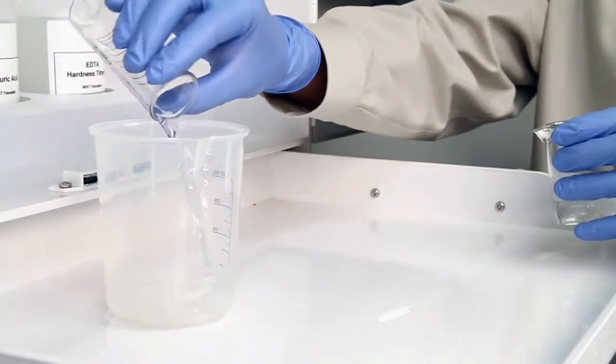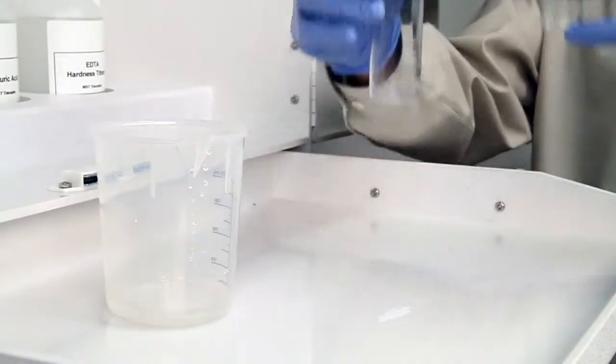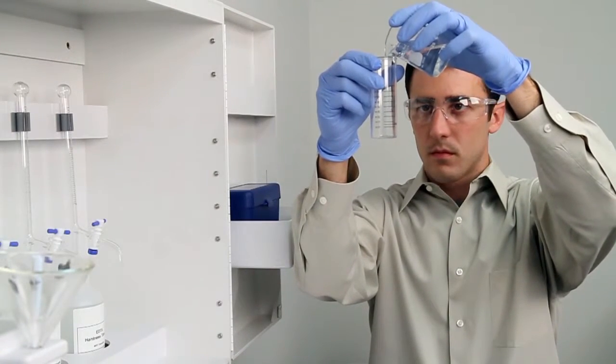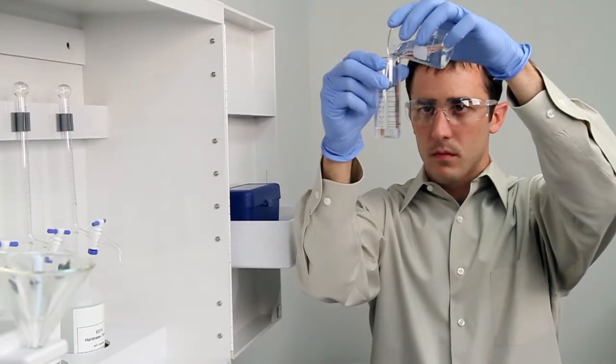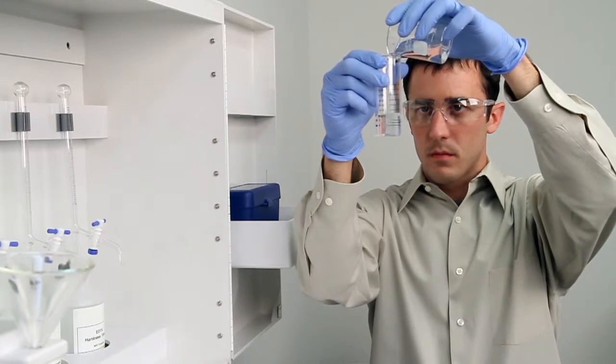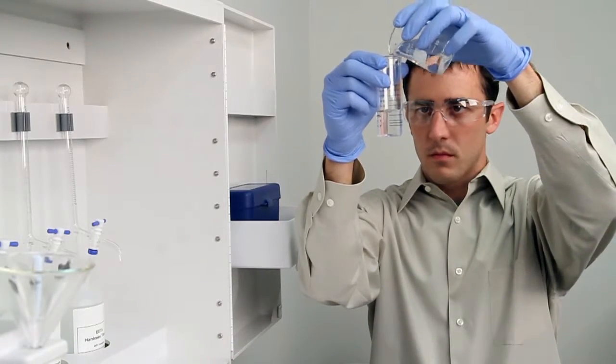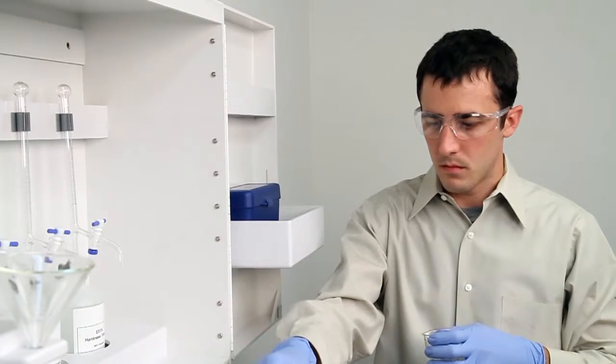Hold the vial close to eye level while pouring to ensure you have an accurate sample. Place the vial on a level surface and bend down to eye level to verify that you have collected an accurate sample.